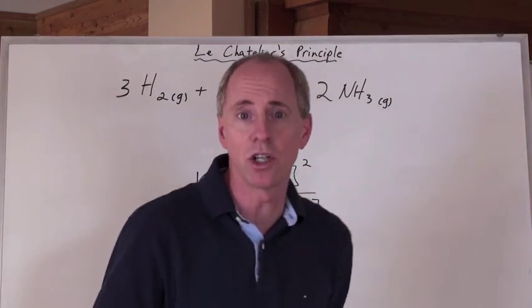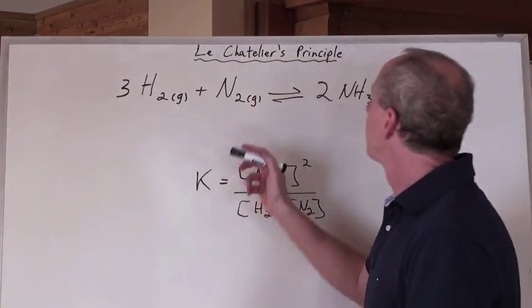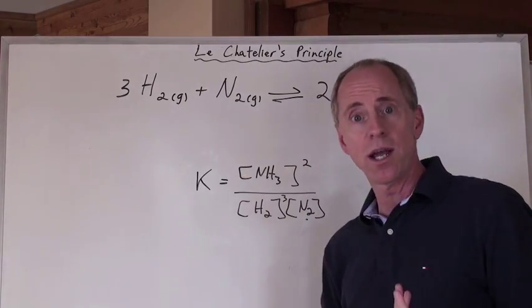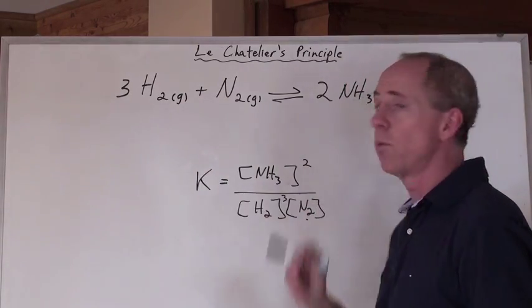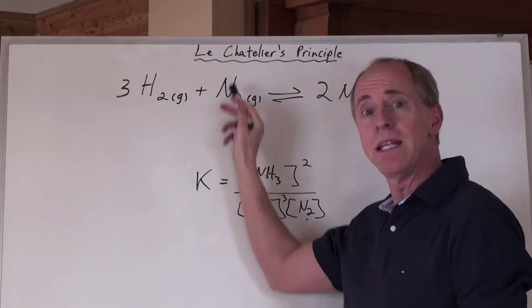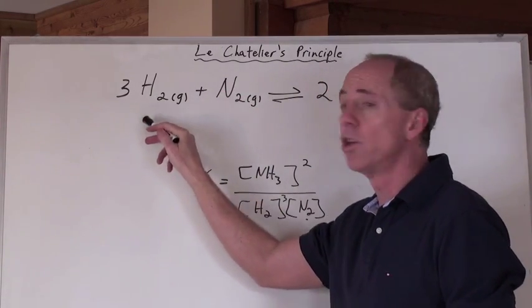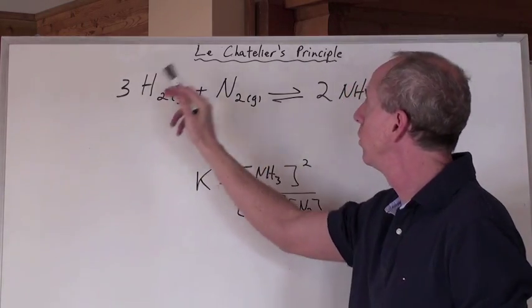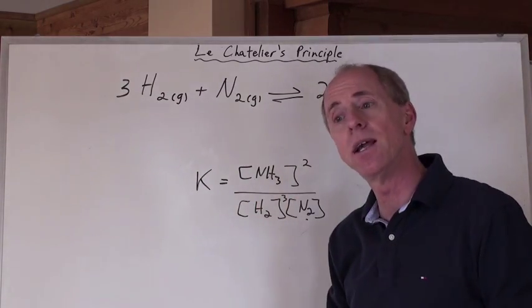So, if somebody says, add N2, which way does the reaction shift? It shifts to the right to make more of this. That means, then, that this concentration is going to go down immediately upon adding it. And this one's going to drop as well because the reaction shifted this way. You're losing here, losing here, gaining here, right?